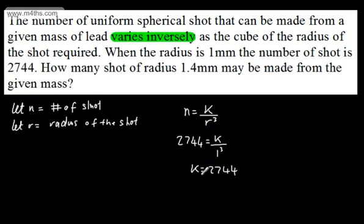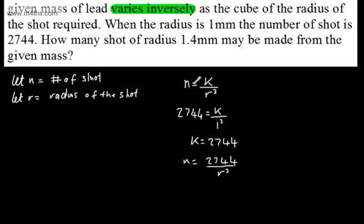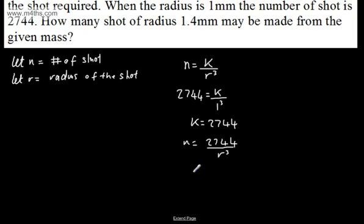So if I put this back together, I can say n will be equal to 2,744 over r cubed. All I need to do now is sub in r is equal to 1.4. So we can now say n is equal to 2,744 divided by 1.4 cubed.